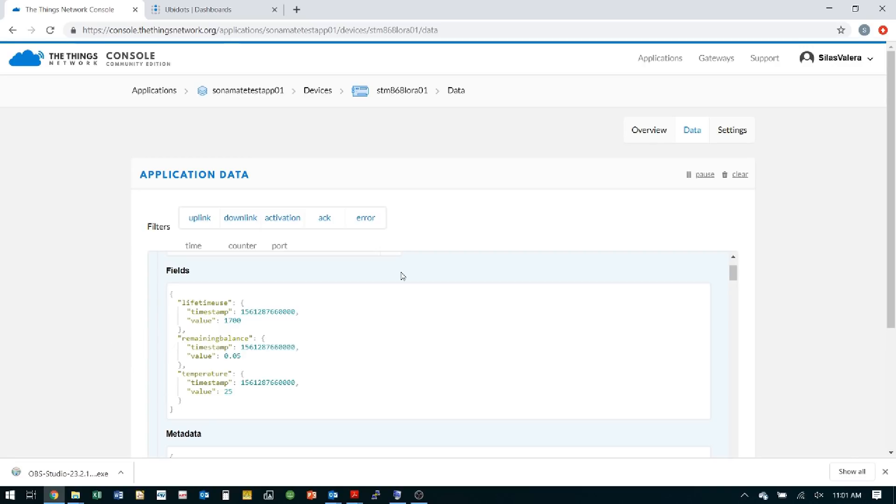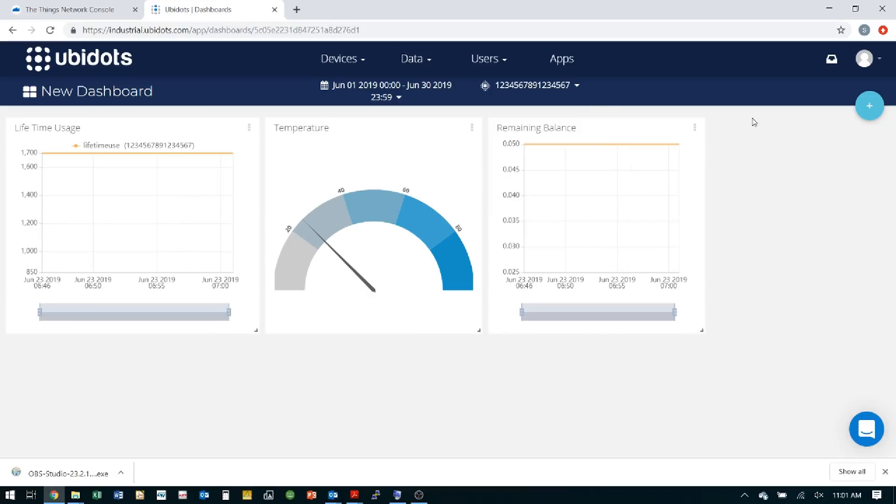The second screen shows three widgets. It shows the web application and it receives the data from the cloud data server and shows the data in more meaningful graphics. The first line graph shows the lifetime use and the second gauge shows the current water temperature and the third line graph shows the available balance. A particular meter ID is associated with a customer and he can log in and see the water usage represented in graphs or charts.